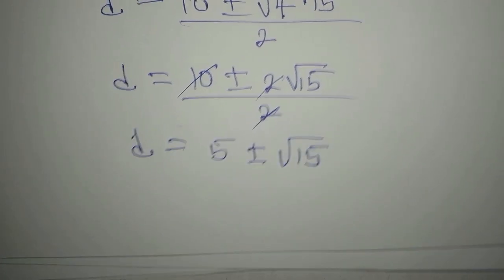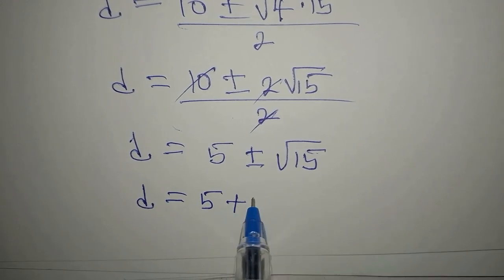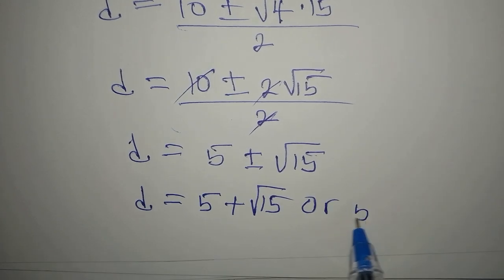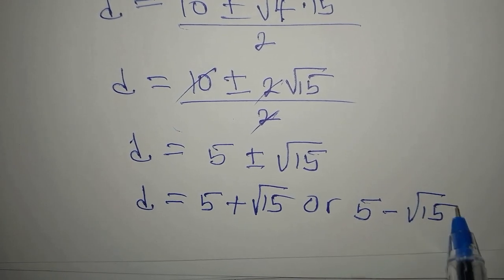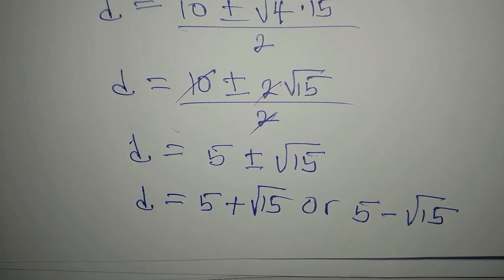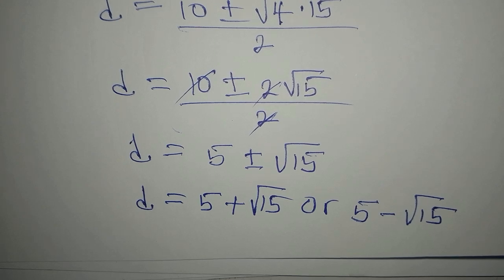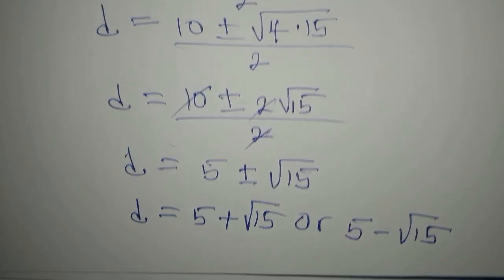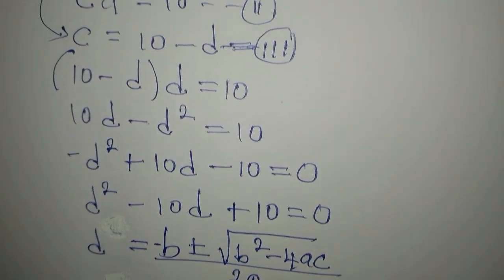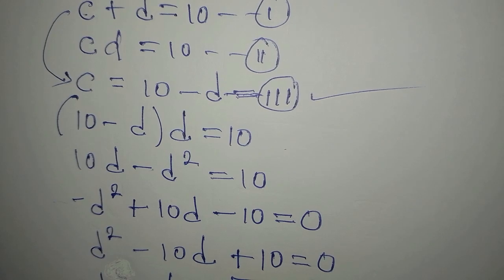We conclude that d equals 5 plus root 15, or d equals 5 minus root 15. Now, since c also appears in the equation, we go back and substitute these values into equation 3, where c is the subject: c equals 10 minus d.